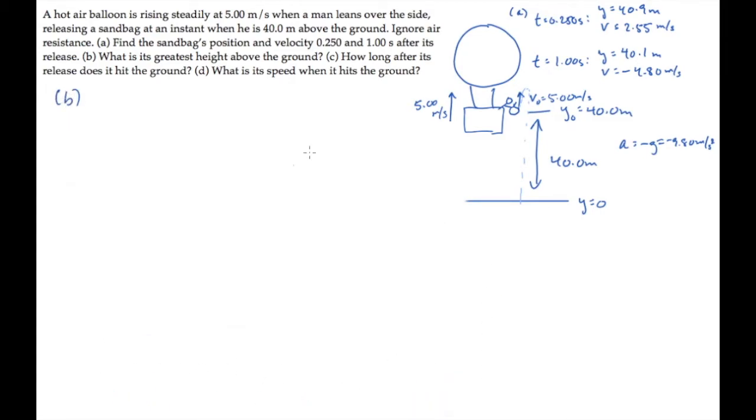Part B of the problem asks us for the sandbag's greatest height above the ground. That greatest height is shown here. If we call it ymax, then we know that it occurs when the sandbag is not moving. It's changing from going up to going down, so its velocity there is zero.